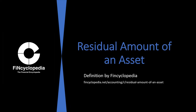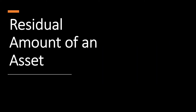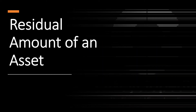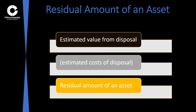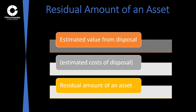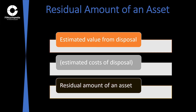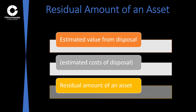Residual amount of an asset — a definition brought to you by Fincyclopedia, the Financial Encyclopedia. In accounting, residual amount of an asset is the estimated amount that the owner of an asset would earn in the present from disposal of that asset, less the estimated cost of disposal.